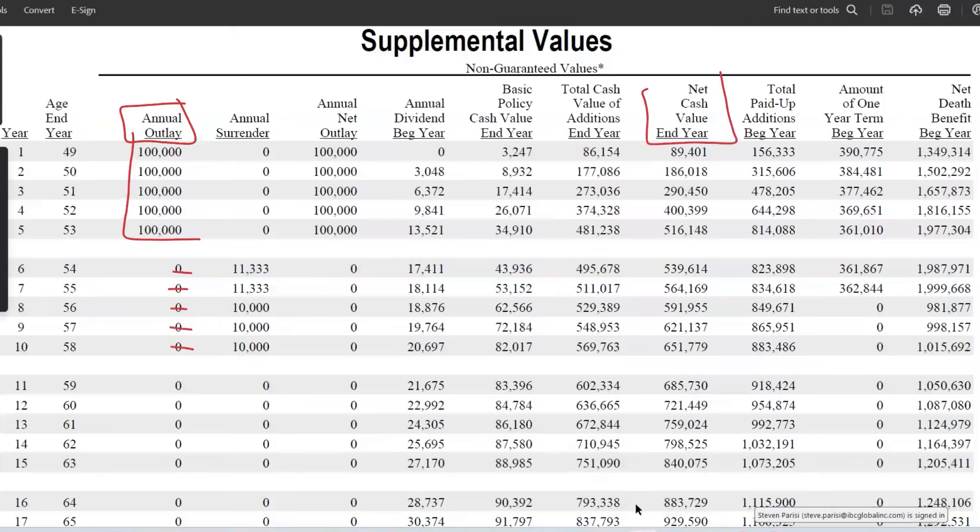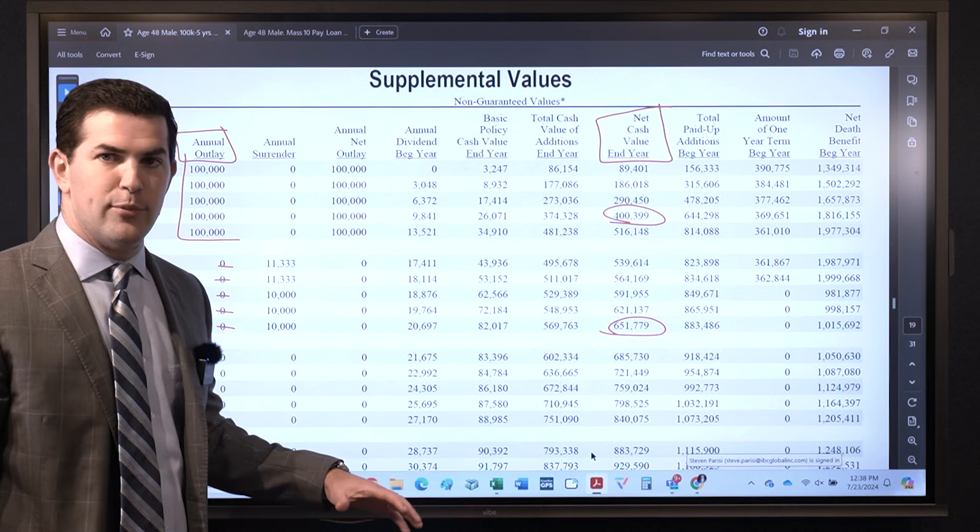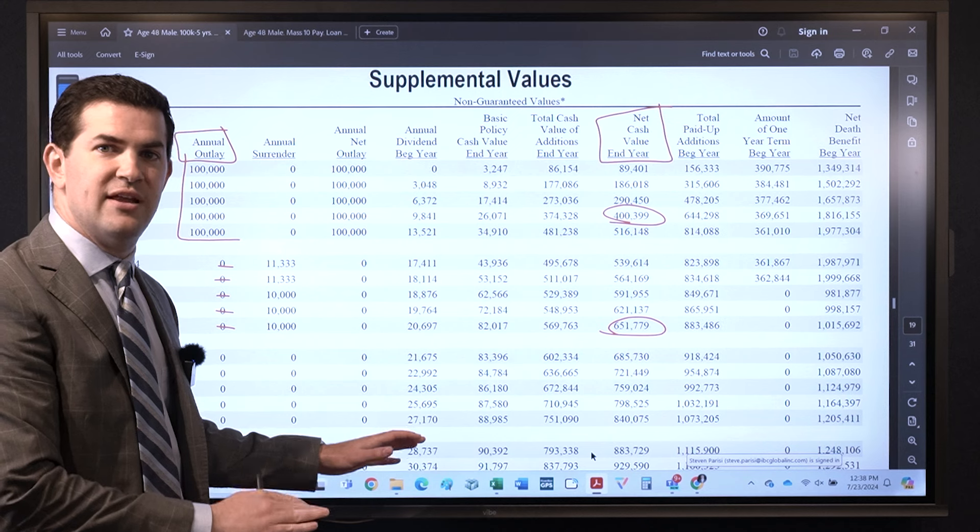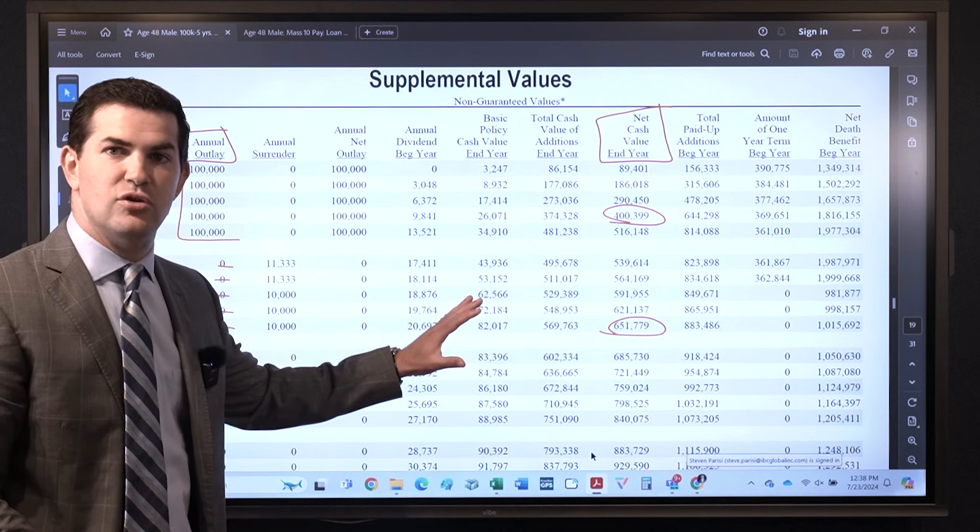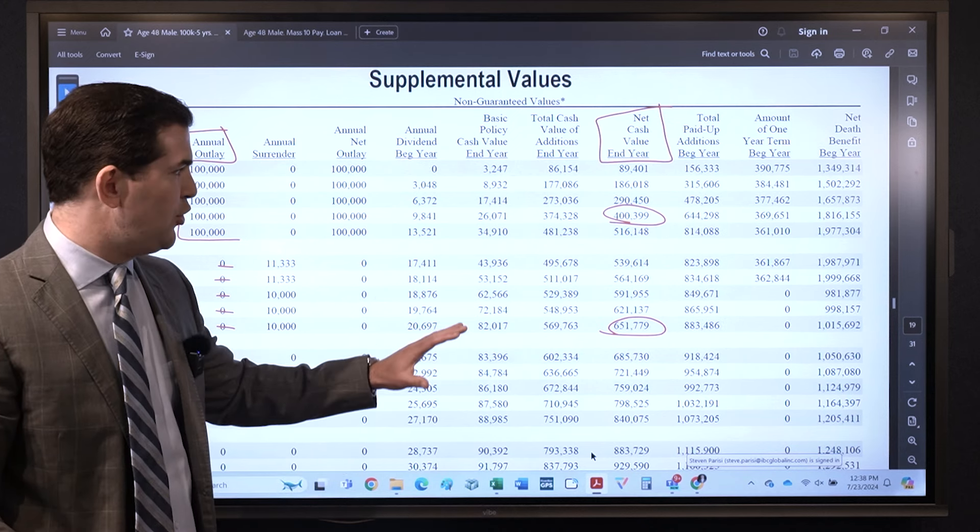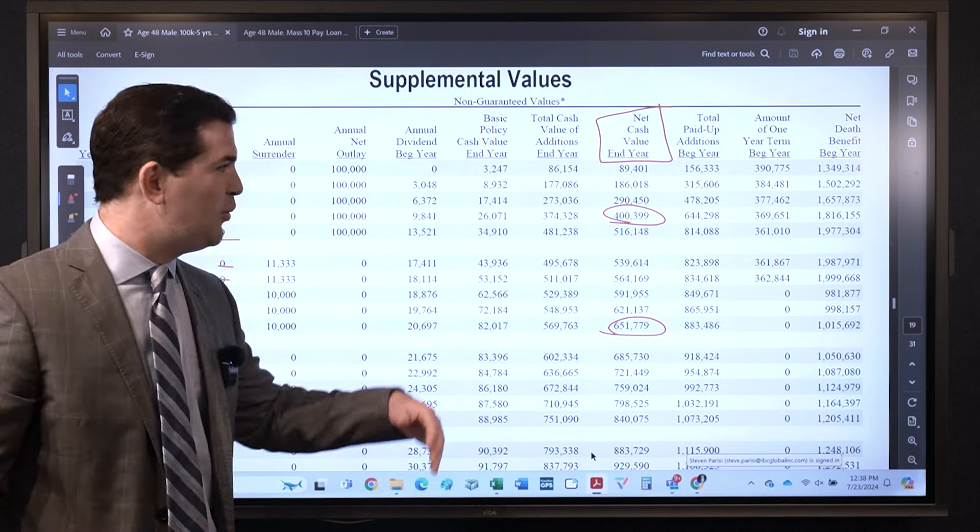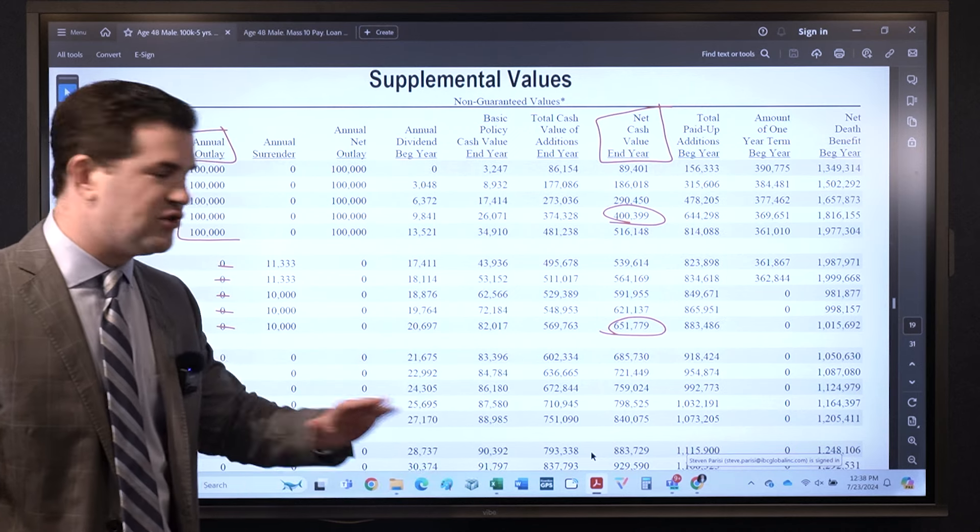Net cash value by the fourth year: you're $400,000. By the 10th year you're $651,000. I'm going to pull up an Excel sheet which is this exact illustration but just so you know that the Excel workbook is real. We just pulled the values from this illustration.